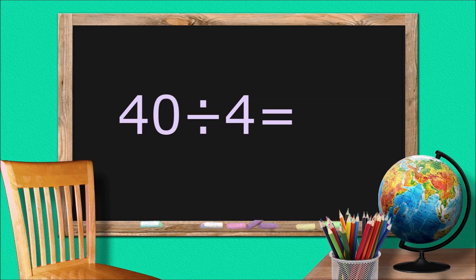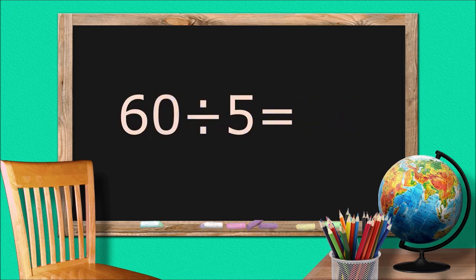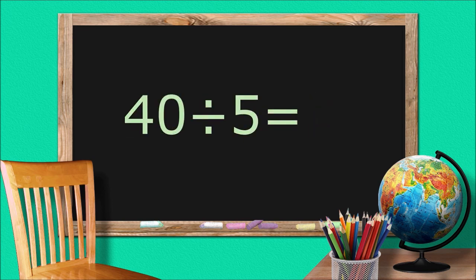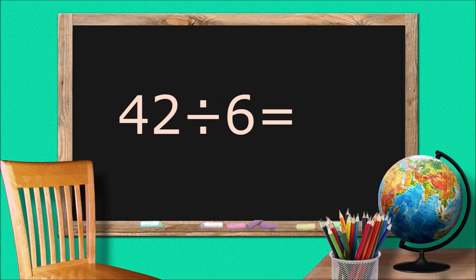24 divided by 6 equals 4. 40 divided by 4 equals 10. 60 divided by 5 equals 12. 35 divided by 5 equals 7. 40 divided by 5 equals 8. 42 divided by 6 equals 7. The end.